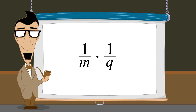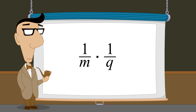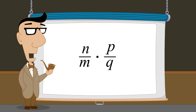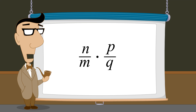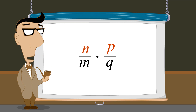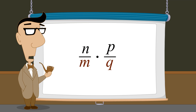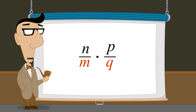But what if instead of multiplying two unit fractions, we want to multiply two common fractions? When multiplying common fractions, the numerators are multiplied, creating the product's numerator, and the denominators are multiplied, creating the product's denominator.